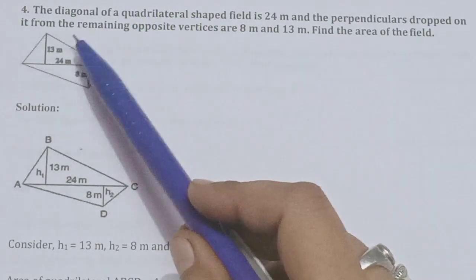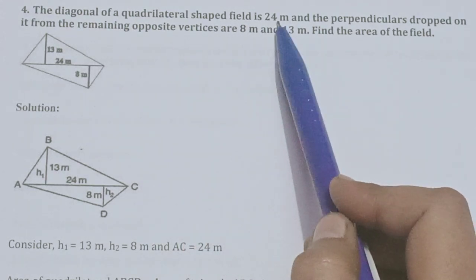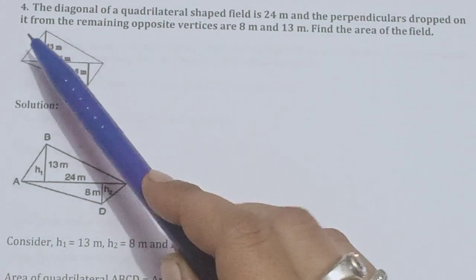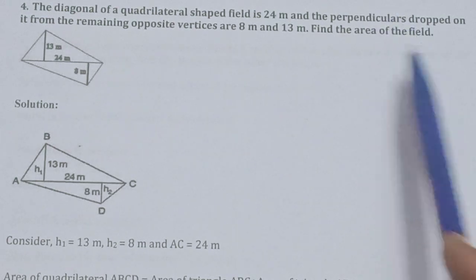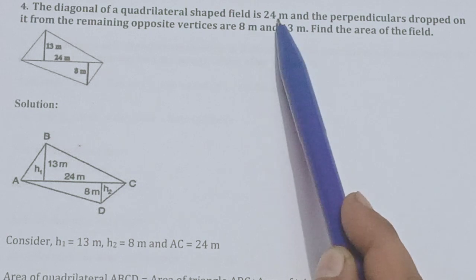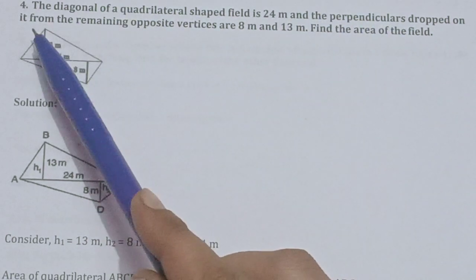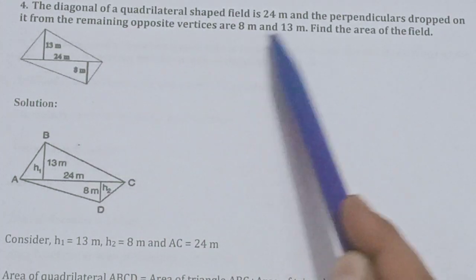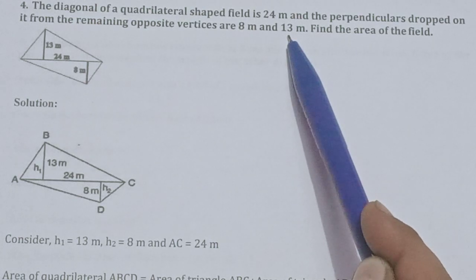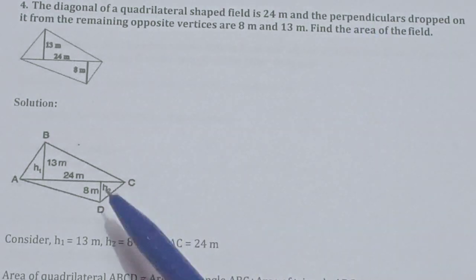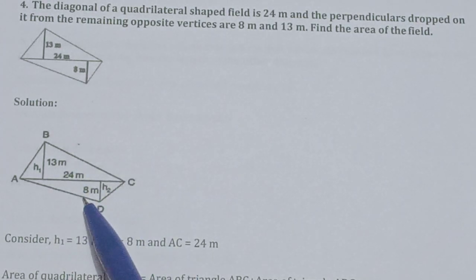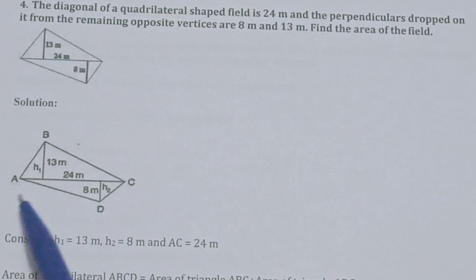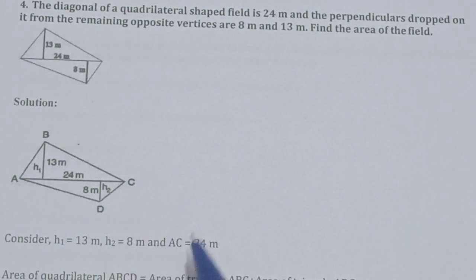Question 4: The diagonal of a quadrilateral-shaped field is 24 meters, and the perpendiculars dropped on it from the remaining opposite vertices are 8 meters and 13 meters. Find the area of the field. We have diagonal d equals 24 m, h1 equals 13 m, and h2 equals 8 m.